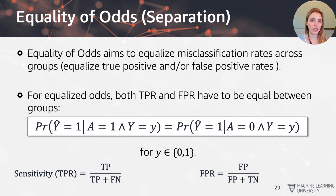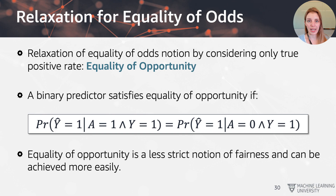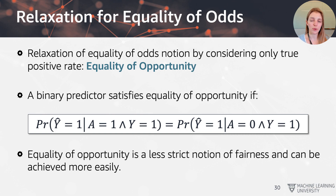It's actually quite hard to equalize both the true positive rate and the false positive rate simultaneously. So we relax this by focusing only on the case where y equals one — this is equality of opportunity. It only considers the true positive rate, making it a less strict notion of fairness that can be achieved more easily in practice.